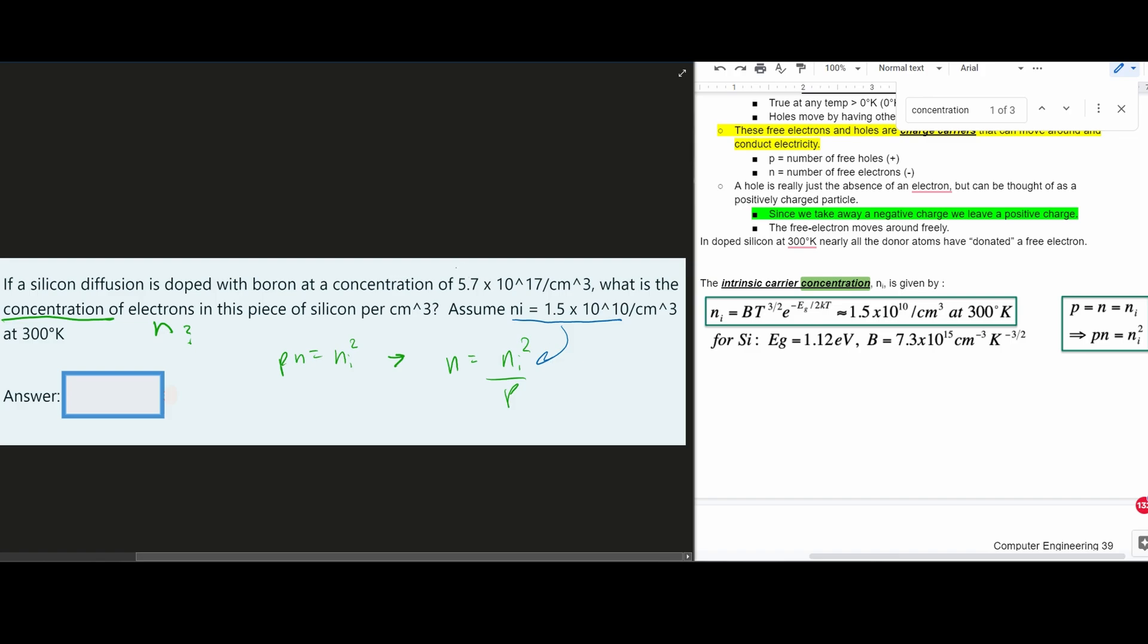And then our P, the P is the doped boron concentration, right? P is going to be this value that we're given right here. And then we're going to plug this into here.